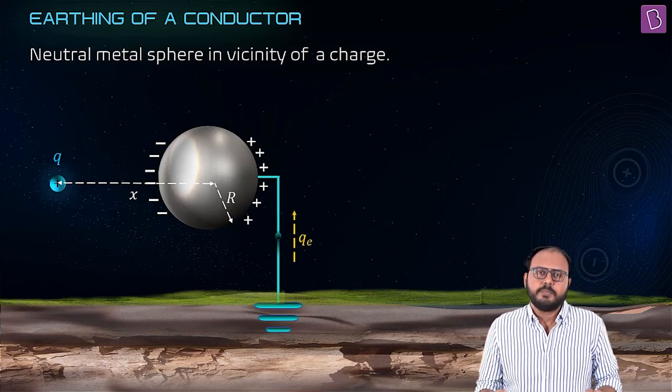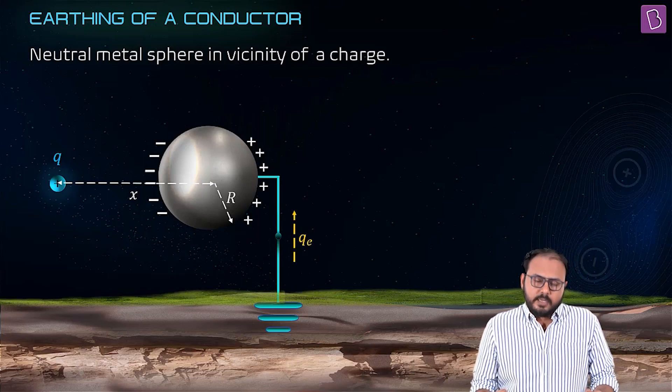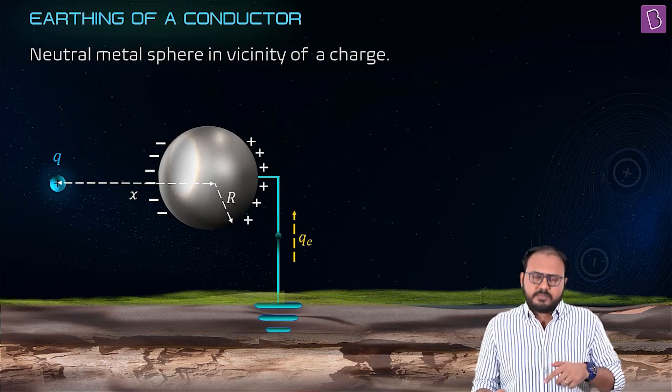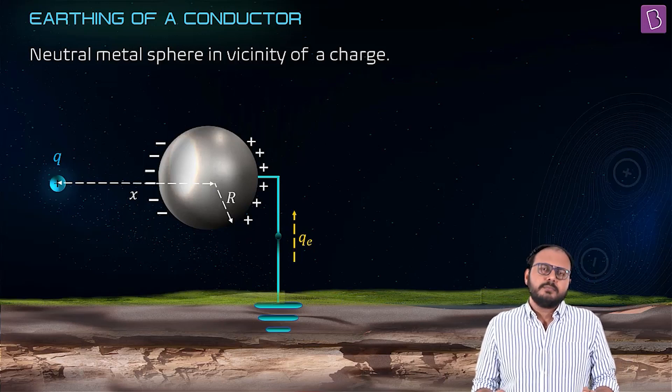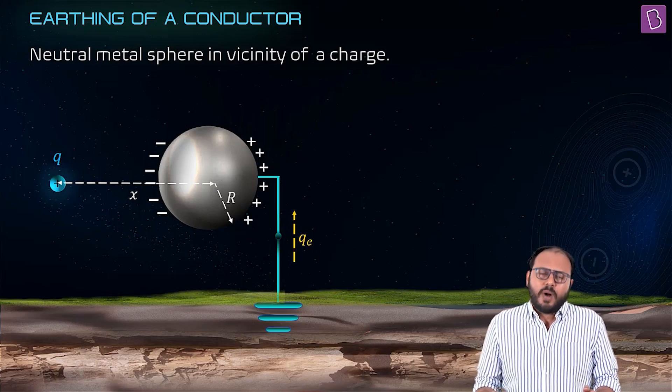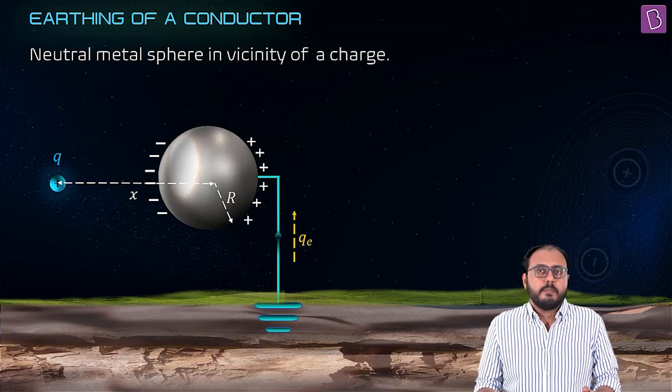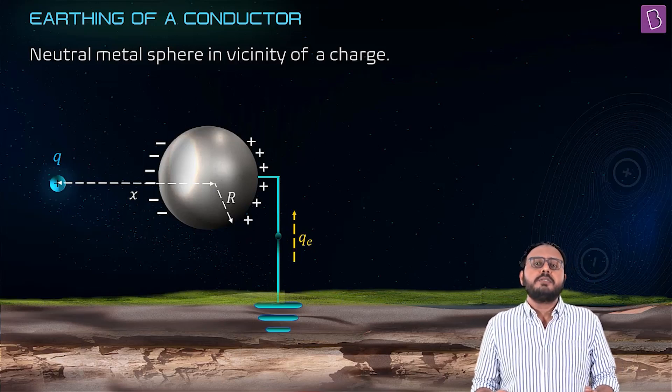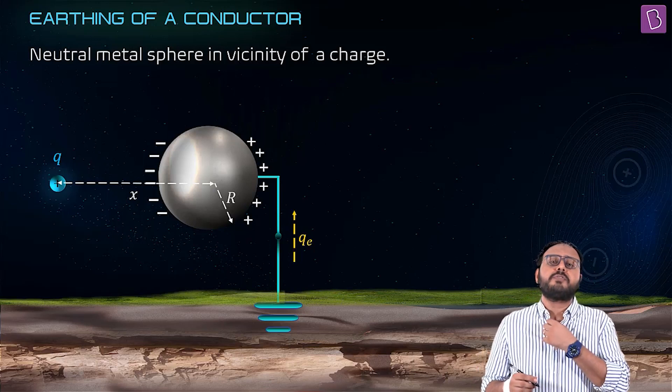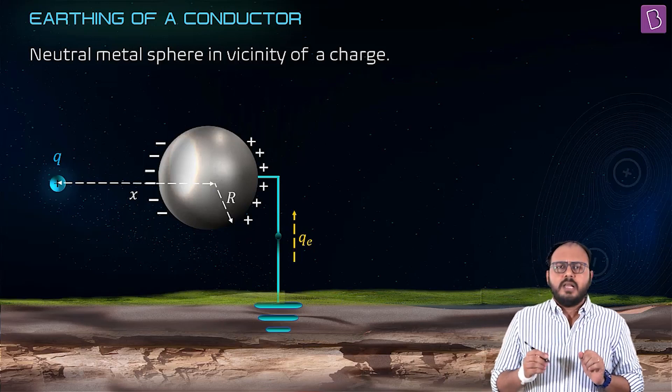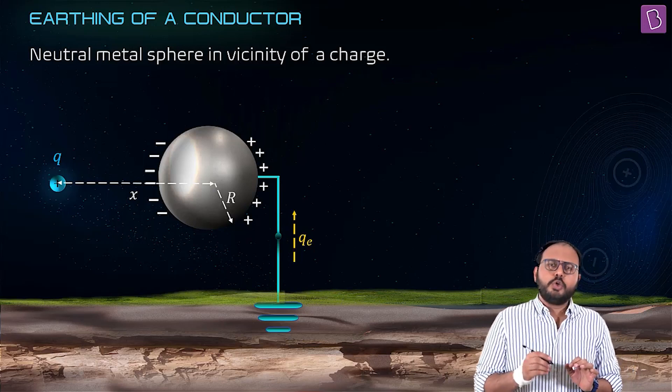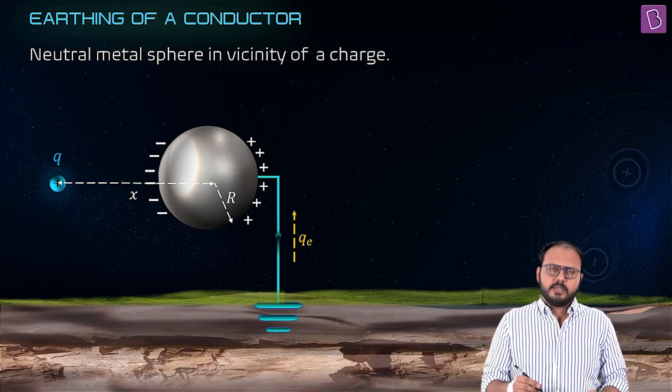Right now what happens? My diagram says that some charge goes from the earth. Why? The answer is very simple: maybe to make the potential of the sphere zero. Let's say earth gave qe amount of charge to the sphere.